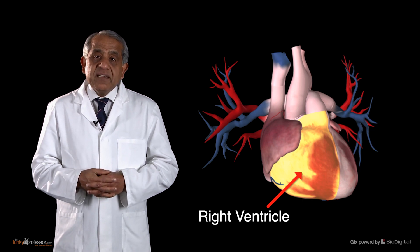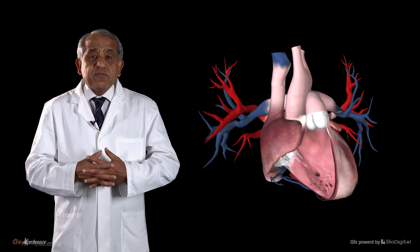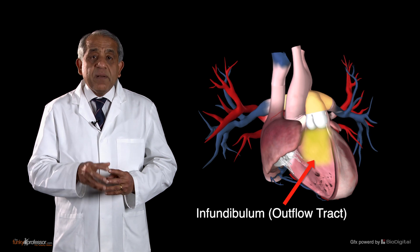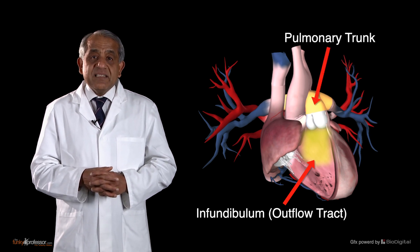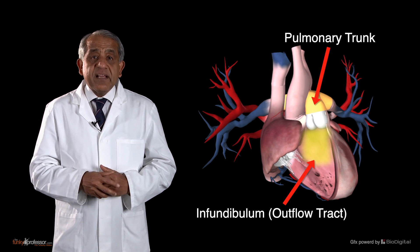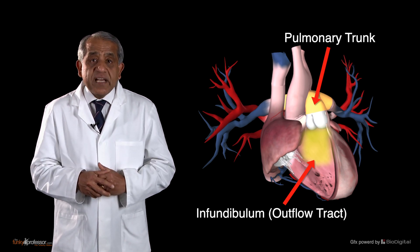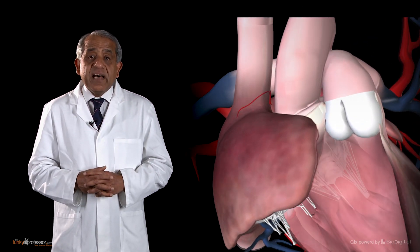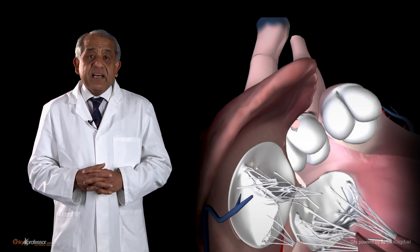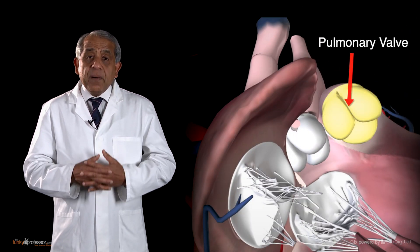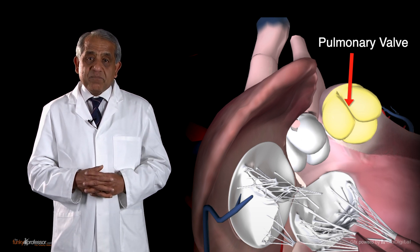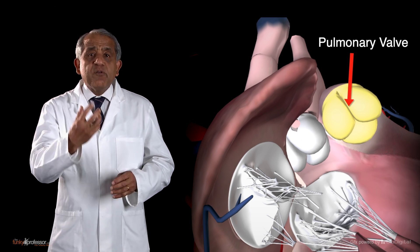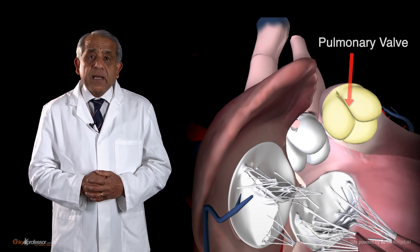Once in the right ventricle, the blood flows into the outflow tract called the infundibulum, which takes the blood into the pulmonary trunk. Between the pulmonary trunk and the infundibulum is an opening guarded by a valve — the pulmonary valve — which has three cusps. The function of the pulmonary valve is to prevent blood from being regurgitated back into the right ventricle from the pulmonary trunk.